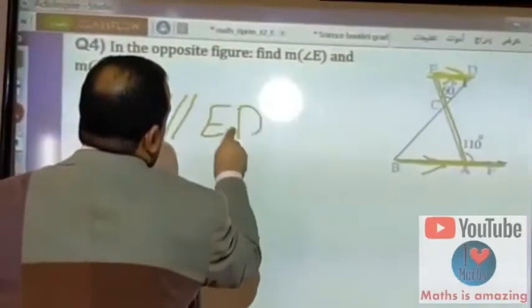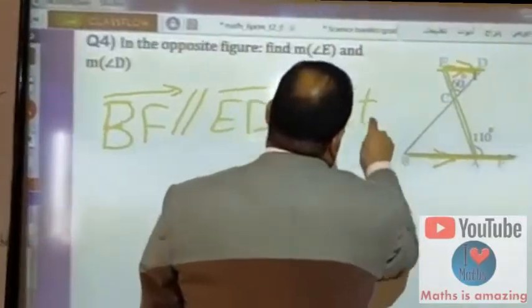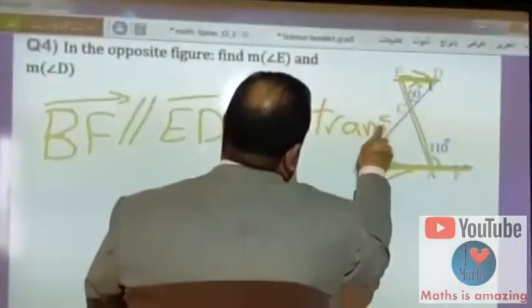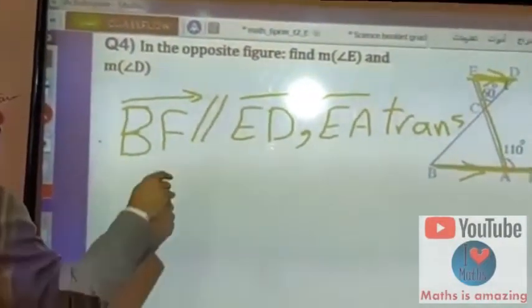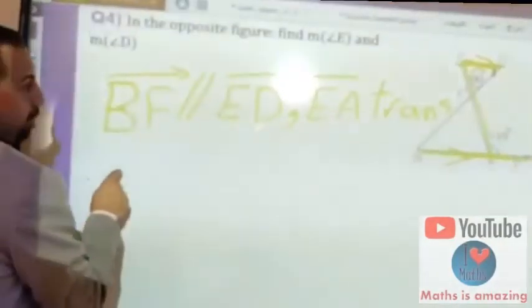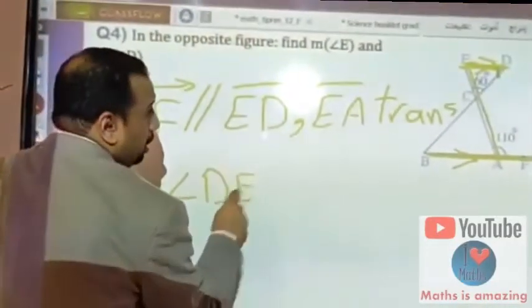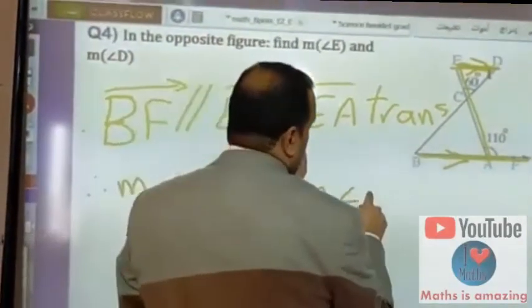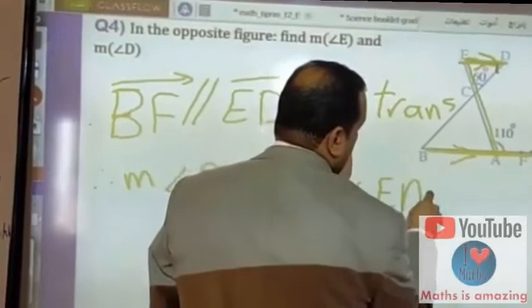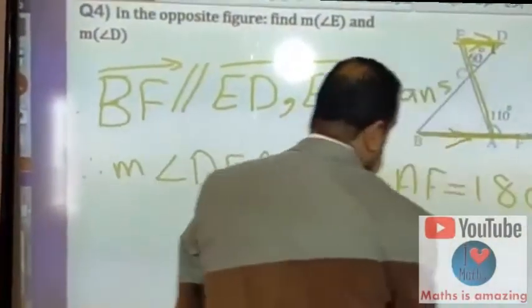BF is parallel to AD, and EA is transversal. Therefore, measure of angle DEA plus measure of angle EAF equals 180 because they are interior angles on the same side.